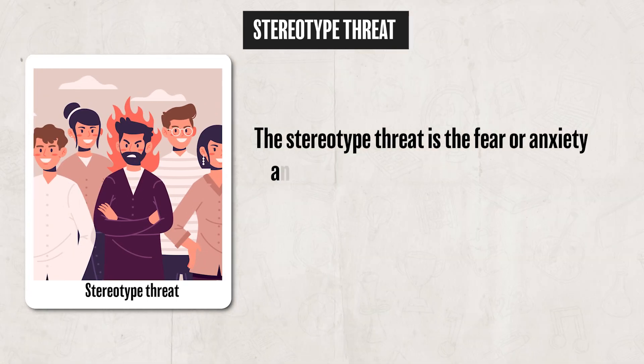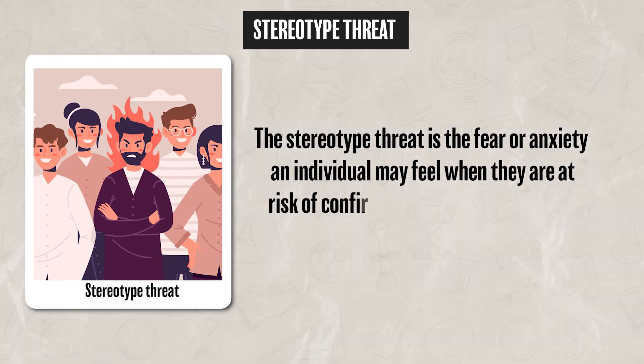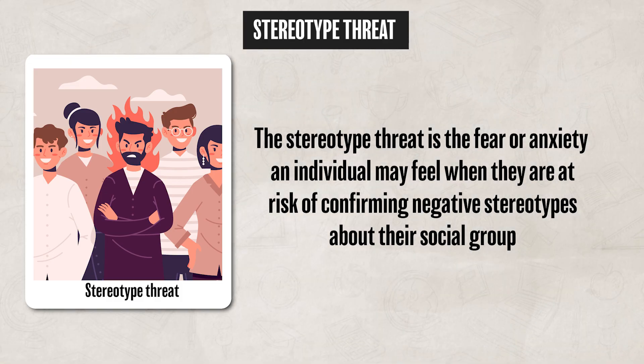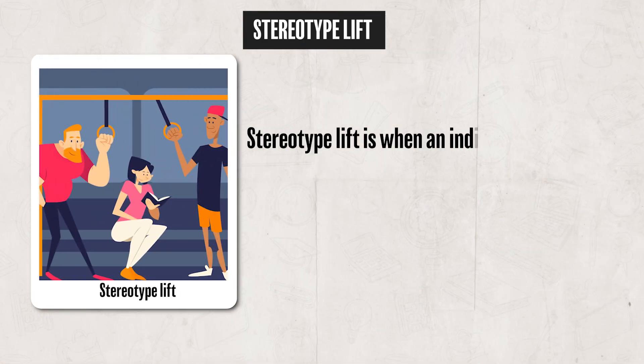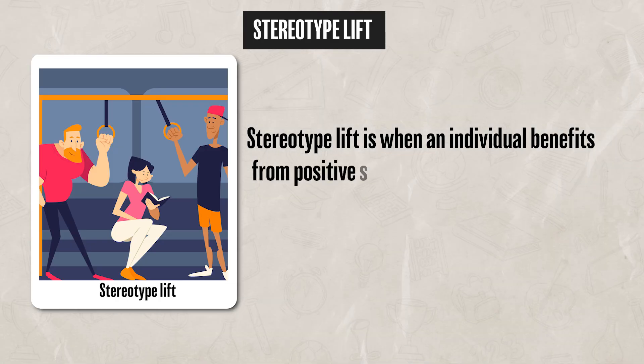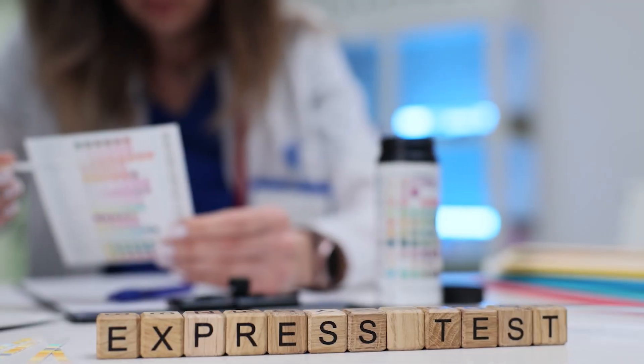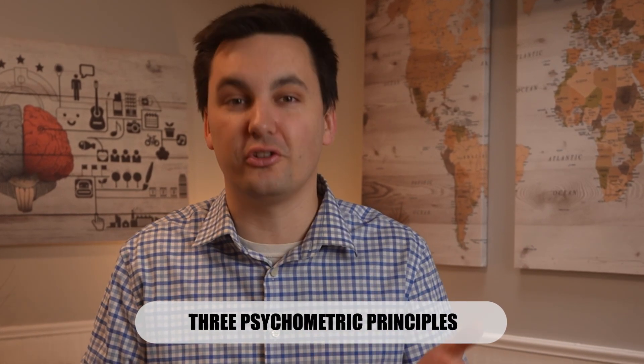The stereotype threat is the fear or anxiety that an individual may feel when they are at risk of conforming to negative stereotypes about their social group. The stereotype lift, on the other hand, is when an individual benefits from positive stereotypes about their group. Both of these concepts can impact how an individual performs on an assessment and can lead to inaccurate results. To make sure that test results are meaningful, psychologists must ensure that any psychological test adheres to three psychometric principles.